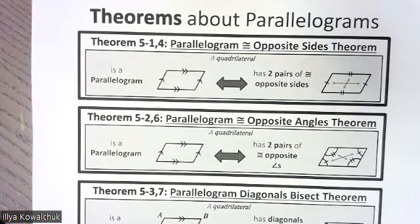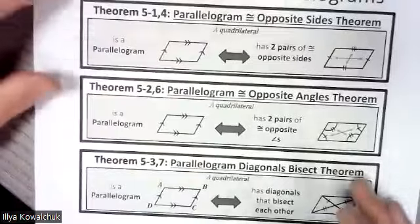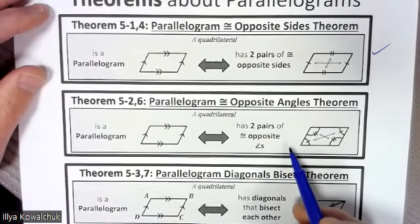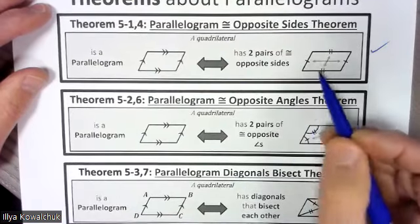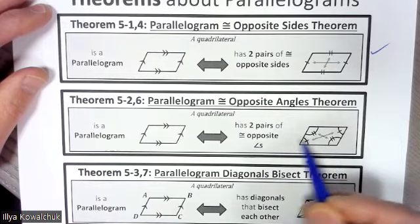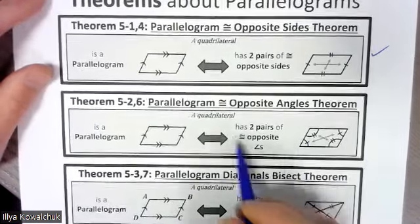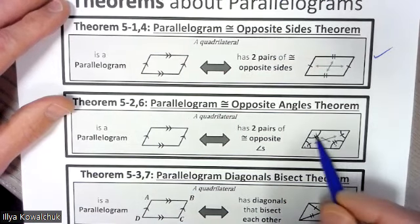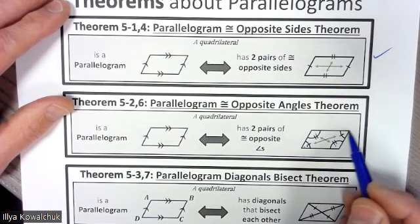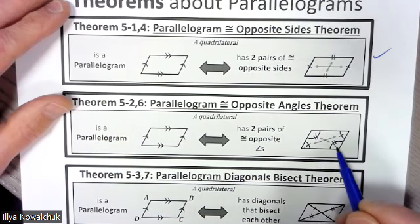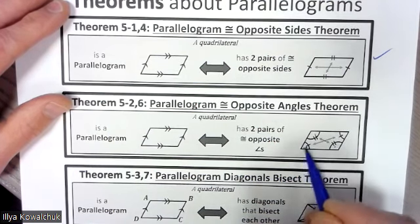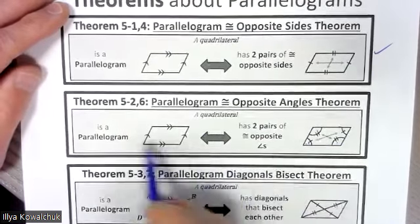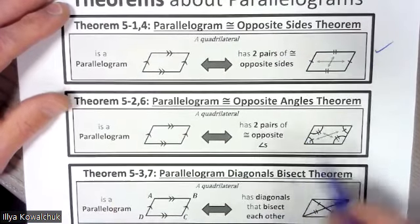Moving on — we've already covered opposite sides. For the same basic reason, going back to that proof, instead of proving opposite sides congruent we can prove opposite angles congruent by the Third Angle Theorem. So the opposite angles in opposite corners are going to be congruent. If the diagram shows an obtuse angle, the opposite angle is also obtuse; acute angles match the opposite acute angle.